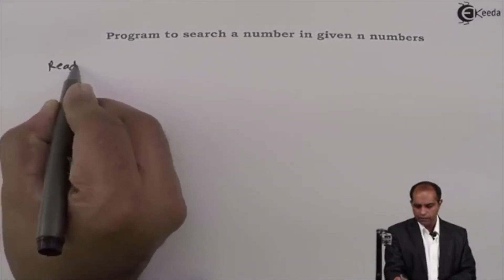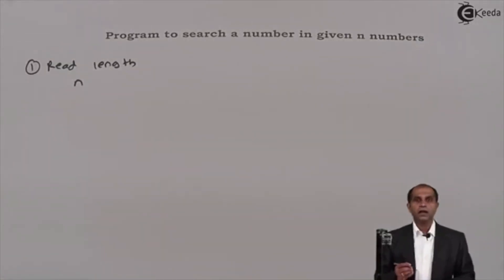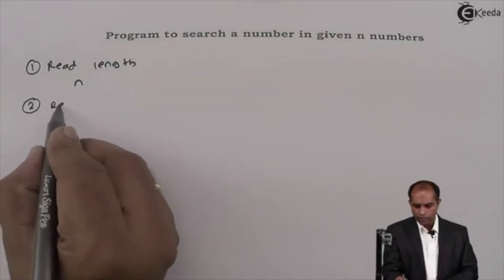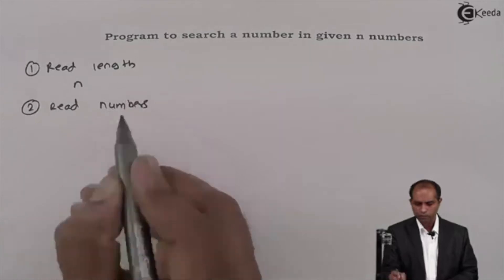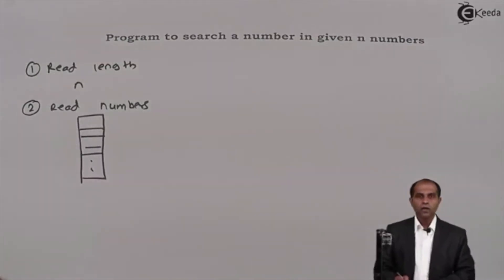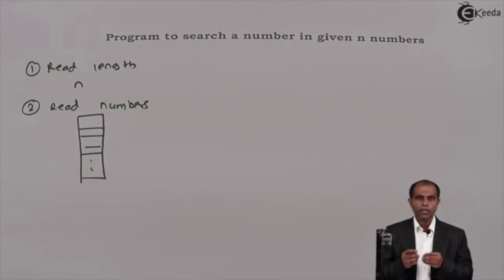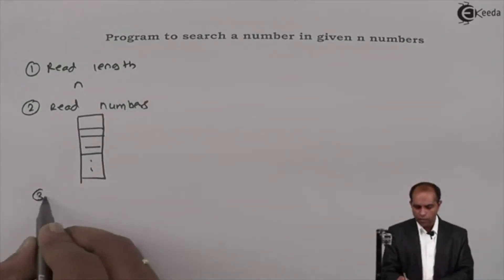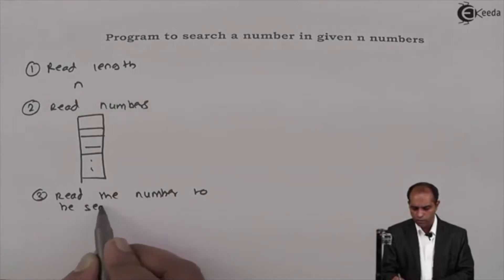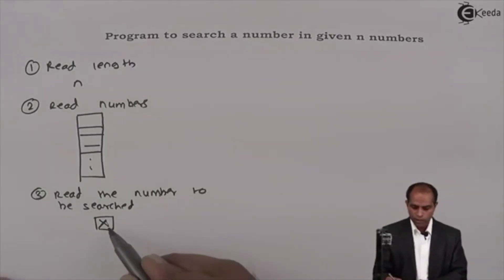First, I'll read the length n — asking the user how many numbers they want to enter. Once that's entered, I'll ask them to enter the numbers. So I'll read n elements into the array. After storing the elements, I need one more additional input: I need to read the number to be searched. Let this search number be x.